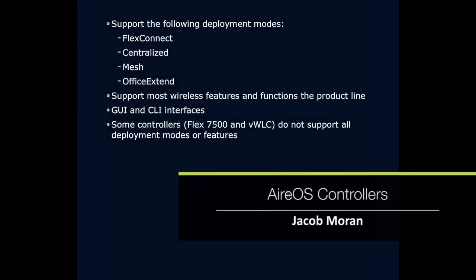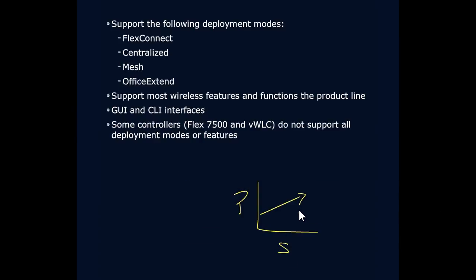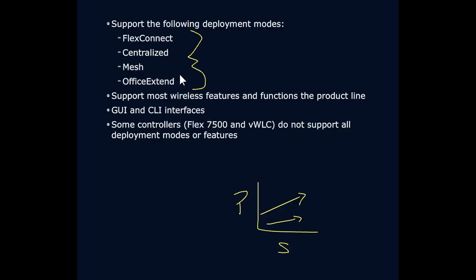We want to focus on the middle tier of performance and scale. We see four different deployment models: FlexConnect for the branch office, the centralized model that we tend to focus on, MeshConnect — a very interesting solution designed to allow access points to mesh with each other rather than having a dedicated connection — and then Office Xtend for our telecommuters.